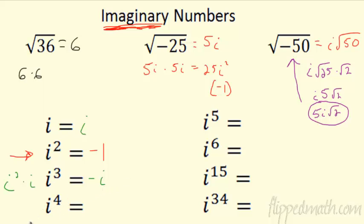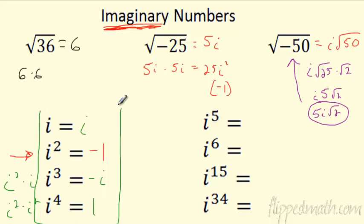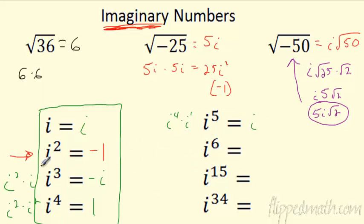What is i to the fourth? You can look at it as i squared times i squared, which is negative 1 times negative 1 — you're back at positive 1. i to the fifth is i to the fourth times i, so you're back at i. So it's really just a cyclic pattern — it keeps going in groups of 4.